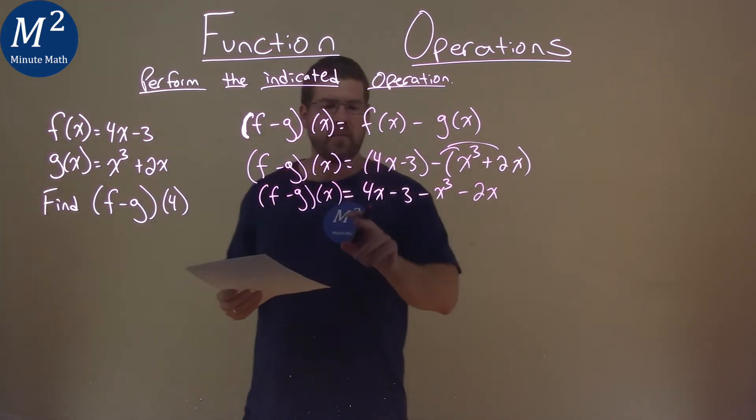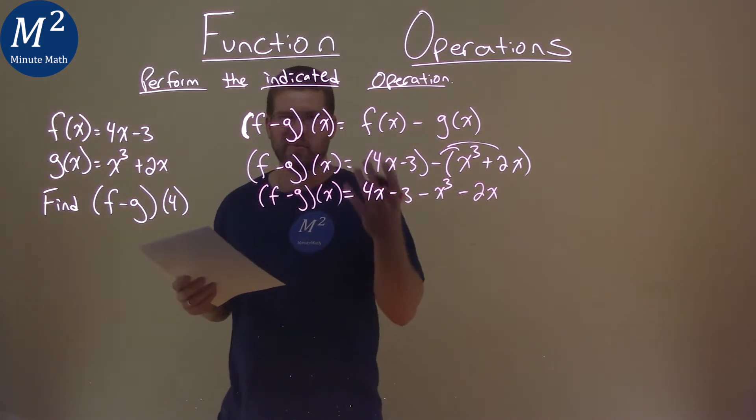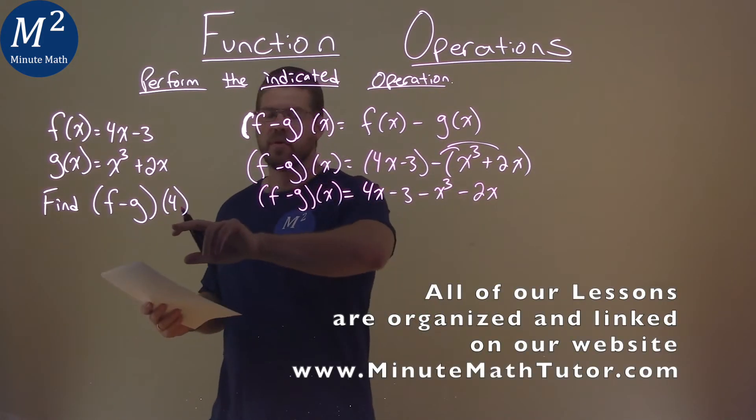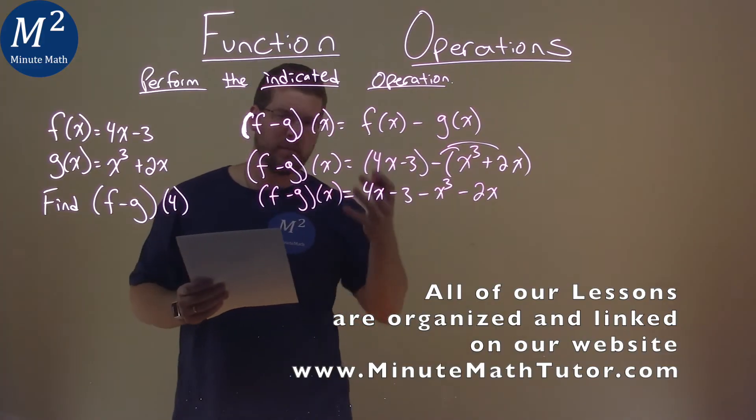Now we're at a point where I feel comfortable enough. Let's put a 4 in for x. We don't have to always simplify it all the way.